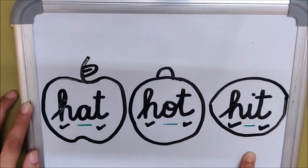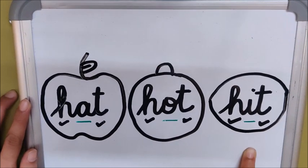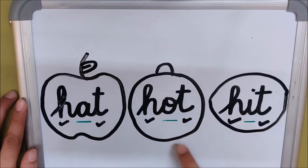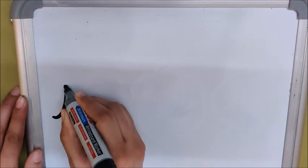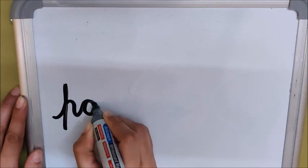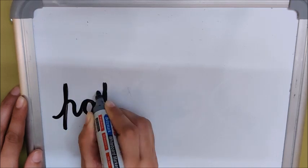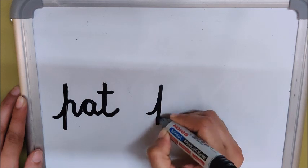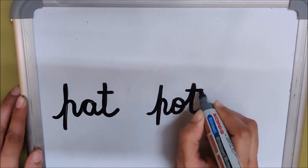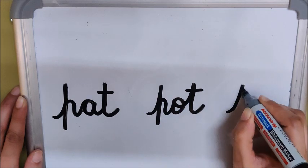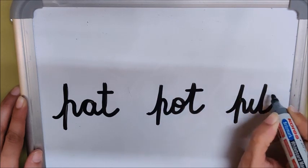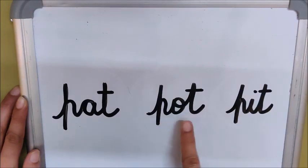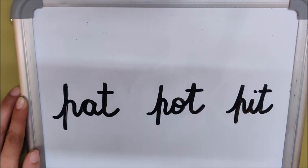I am going to write more words. Let us see — can you tell me which one is an apple word, which one is an orange word, and which one is an idly word? P-A-T: pat. P-O-T: pot. P-I-T: pit. Pat, pot, pit. Children, can you tell me which one is an apple word, which one is an orange word, and which one is an idly word?